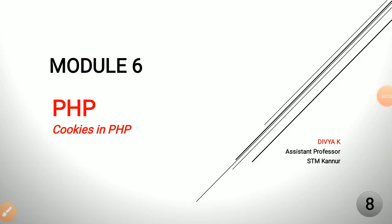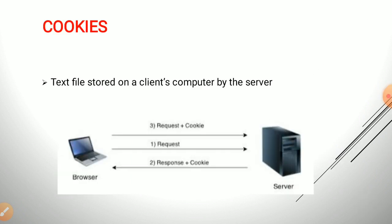In this video we shall discuss cookies in PHP. A cookie is a text file that a website stores on a client's computer to maintain information about the client during and between browsing sessions. A cookie records user preferences and other information that the website can retrieve during the client's subsequent visits. For example, if we visit a website for the first time and select our preferred language, the server may create a cookie to store that preference, and the next time we visit, it will display pages in our preferred language.